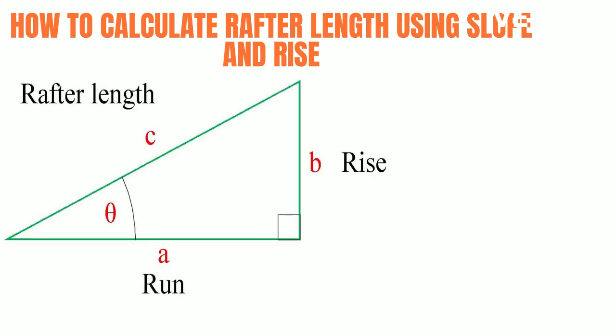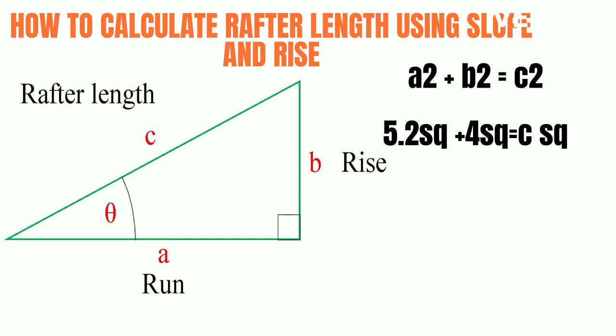Now we are going to use the right angle triangle formula to calculate the rafter length. Therefore a squared plus b squared is equal to c squared, which is 5.2 squared plus 4 squared equals c squared.